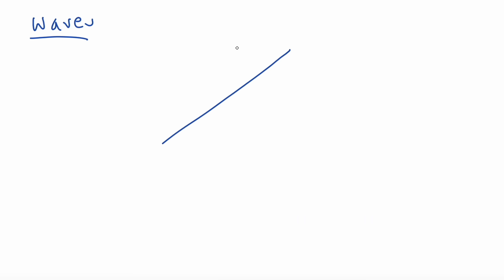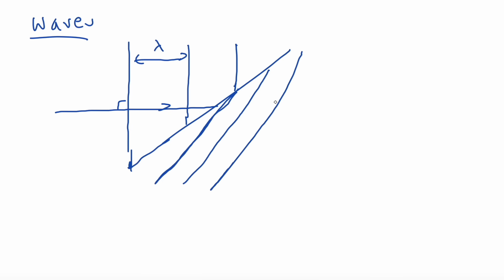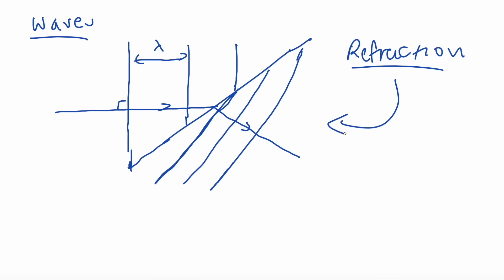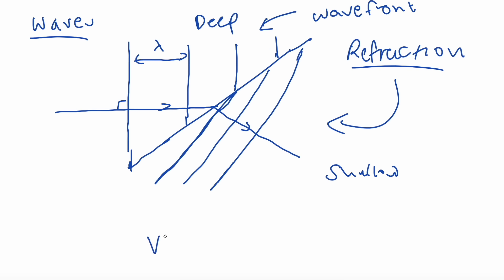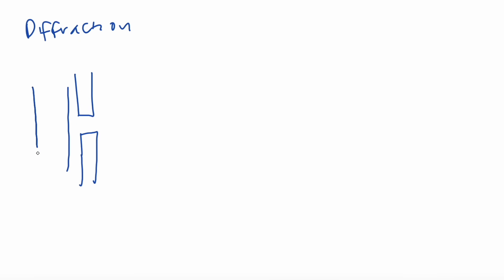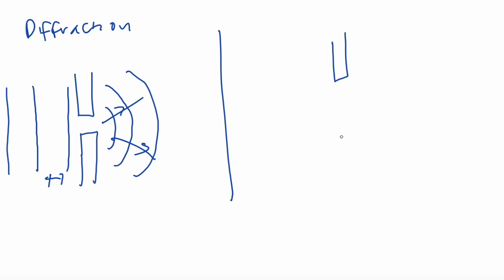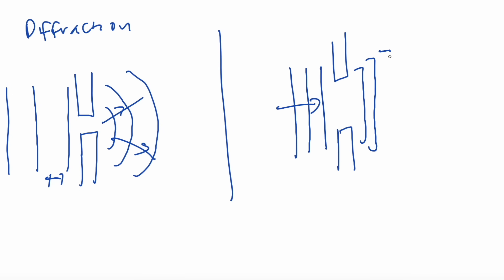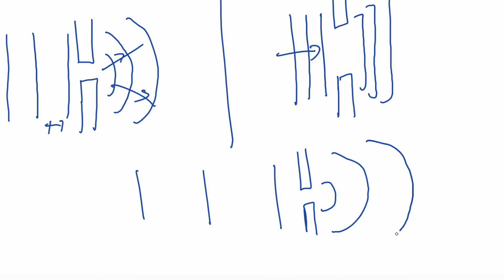Let's now talk about waves. Starting with refraction: when the wave moves from a deep medium to a shallow medium, the wave fronts decrease as it passes through. Refraction is the bending of the wave, and the equation is speed equals frequency times wavelength. For diffraction: when a wave approaches a narrow barrier it diffracts; with a bigger barrier it diffracts differently; and when the wavefront is bigger than the barrier gap, it diffracts in a broader pattern.